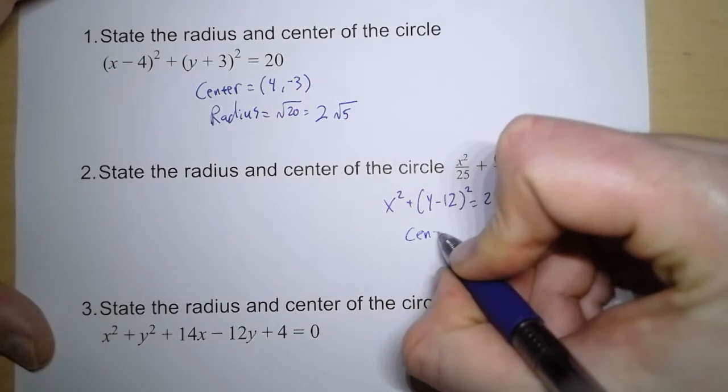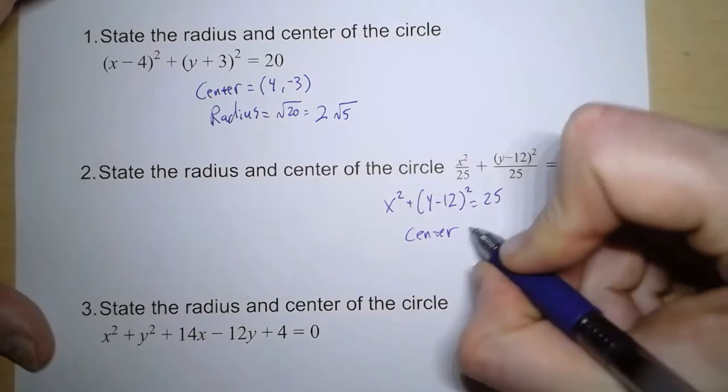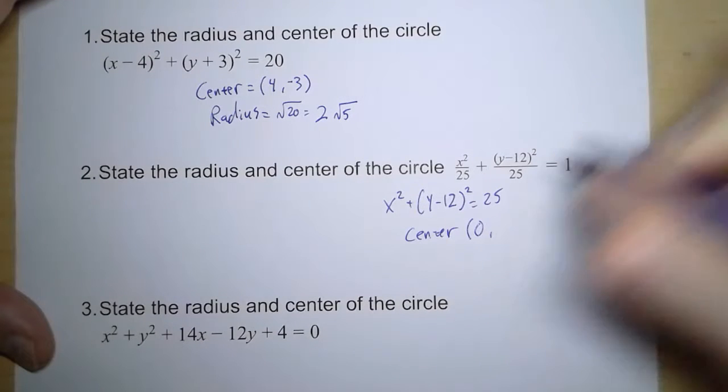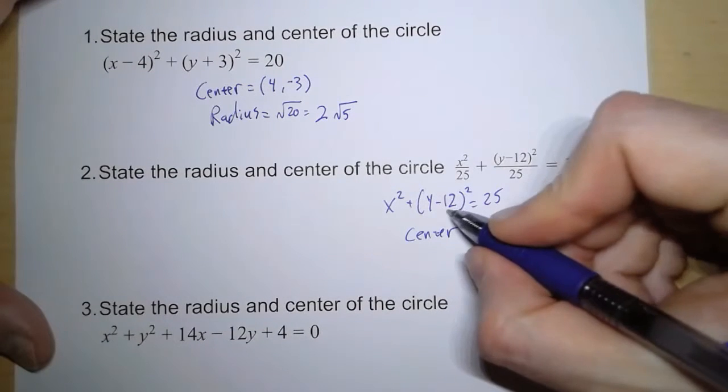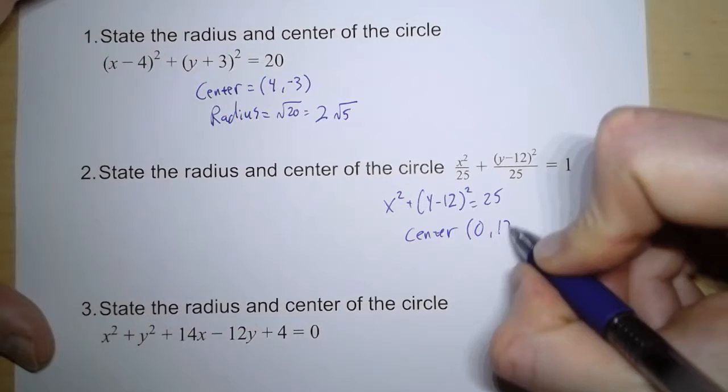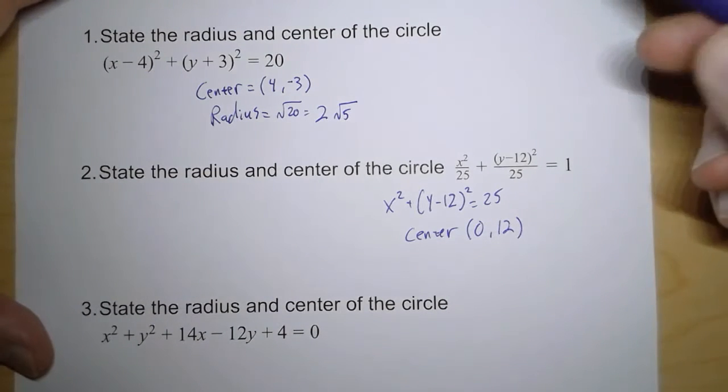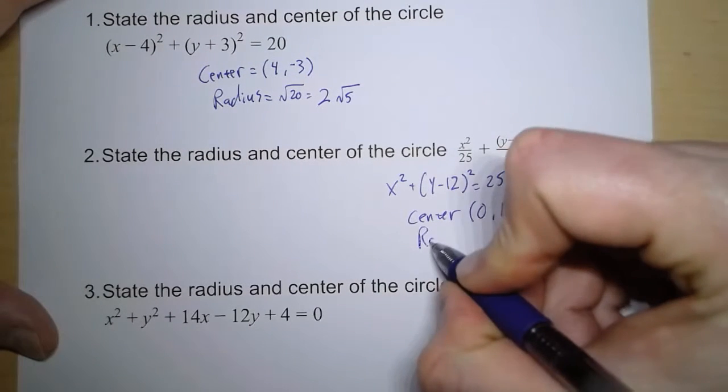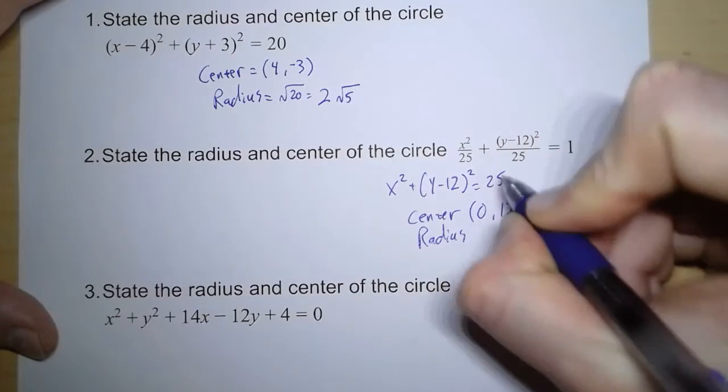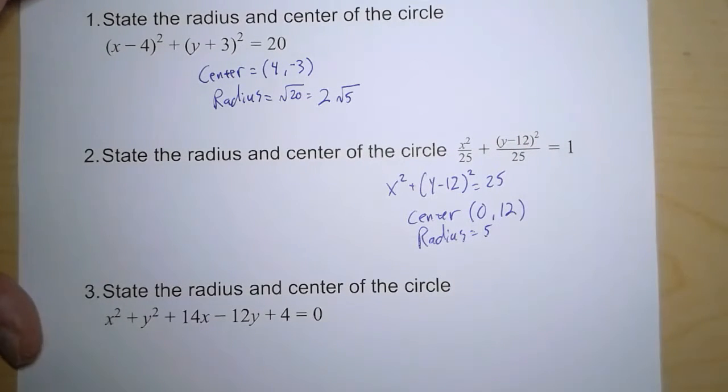So for the center, notice that x, we're not adding or subtracting, so the x value is still 0. It's not moved. Now the y, because it's minus 12, it gets moved up 12. So the center is at 0, 12. And the radius is the square root of 25, which is 5.